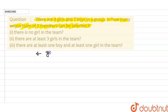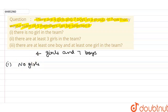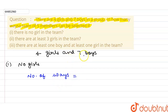First case: no girls in the team. So if there are no girls, the number of ways is to select five boys out of seven boys. I can write it as 7C5.